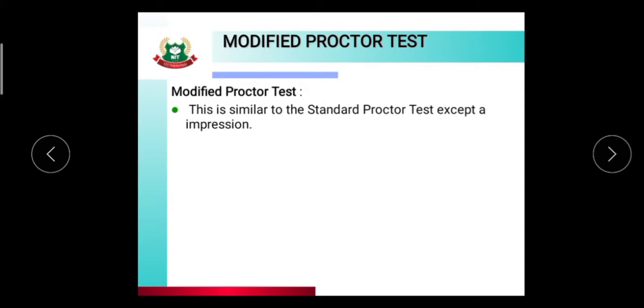Modified Proctor Test: this is similar to the Standard Proctor Test except for impression. The test is normally used in testing materials for greater shearing strength.